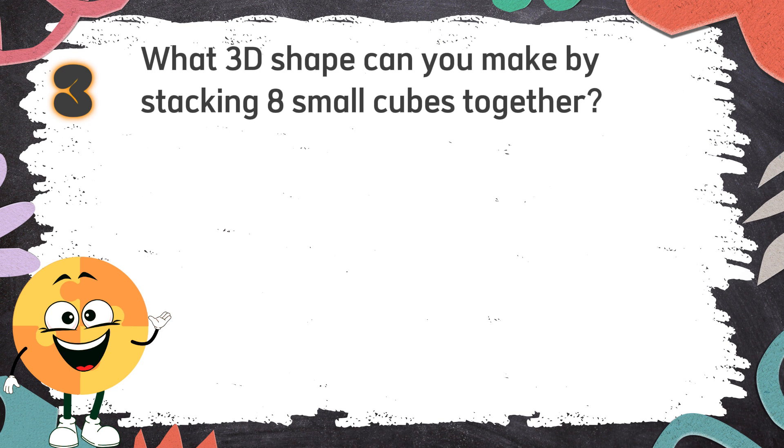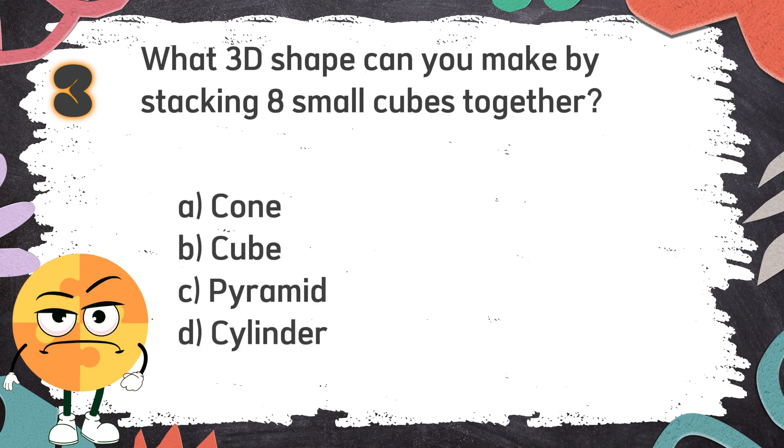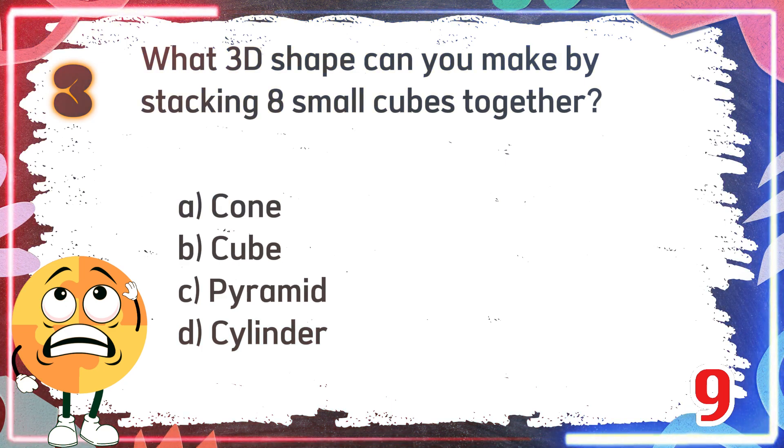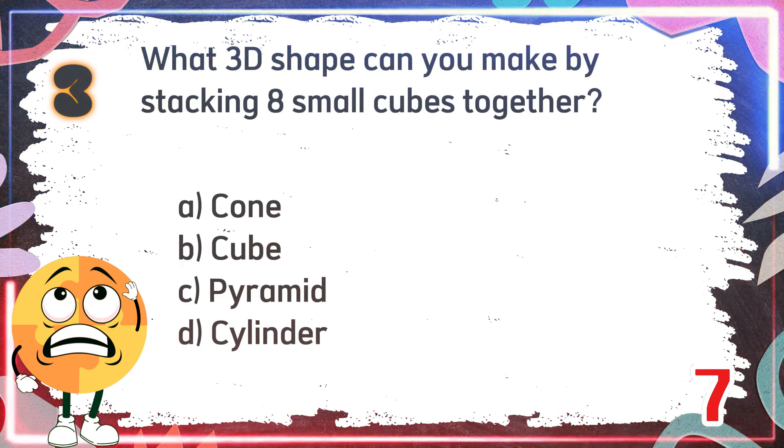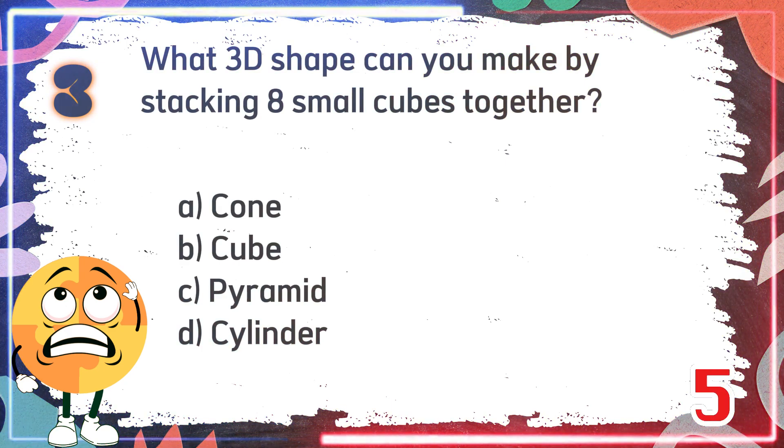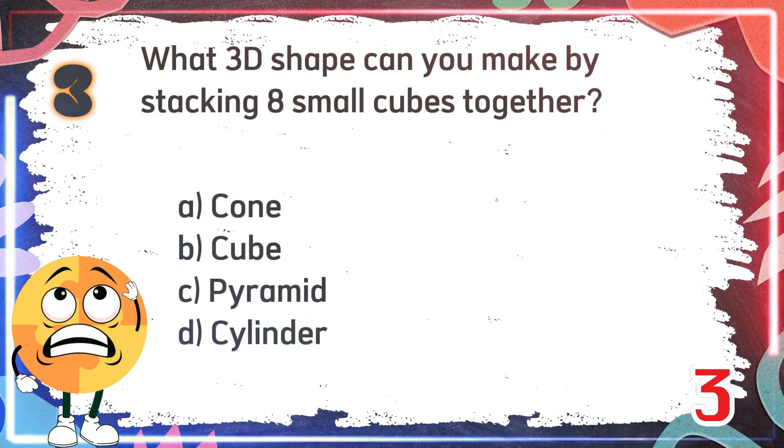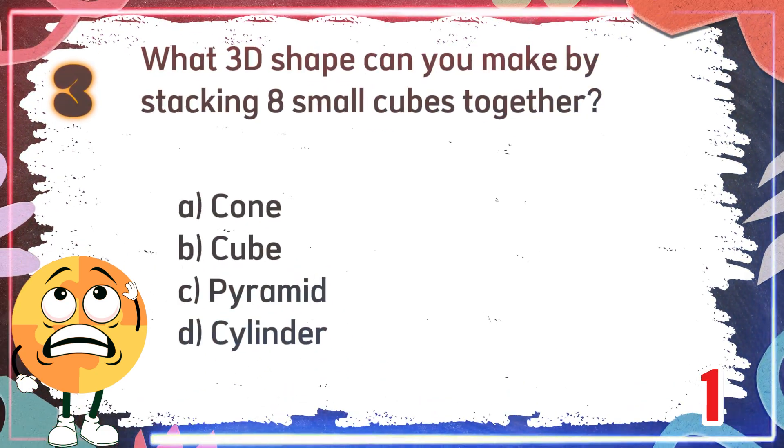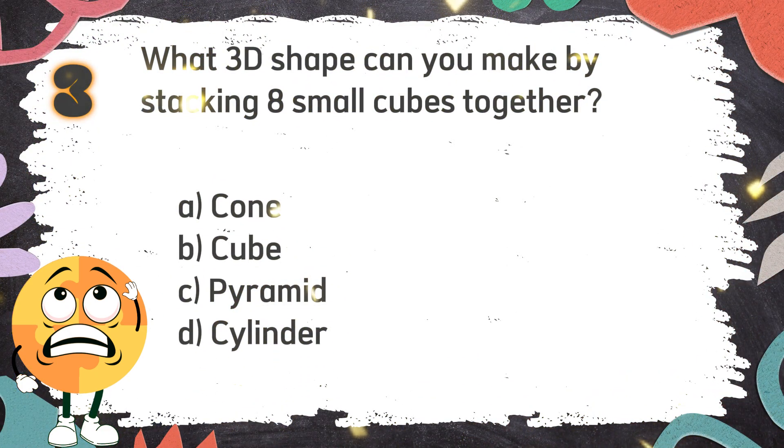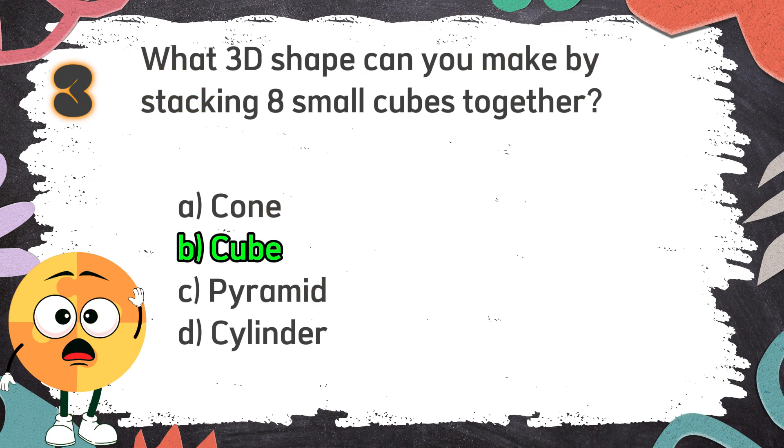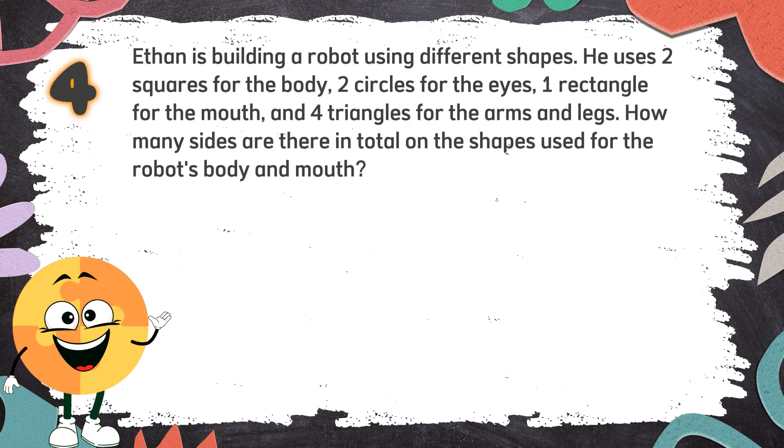Number 3: What 3D shape can you make by stacking 8 small cubes together? The choices are A. Cone, B. Cube, C. Pyramid, D. Cylinder. The correct answer is B. Cube.